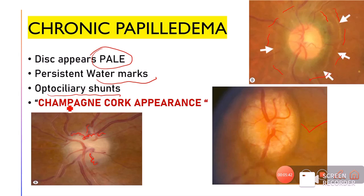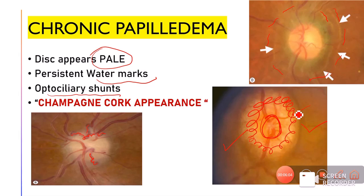The typical appearance of a chronic papilledema disc is called a champagne cork appearance. The cup is not clearly visible, and a whitish appearance on the disc represents exudates from chronic axoplasmic stasis. Amyloid deposits may also be present in chronic papilledema, appearing as yellowish-whitish color deposits on the disc surface.